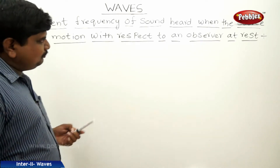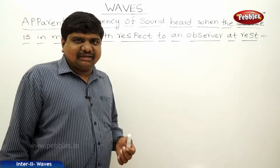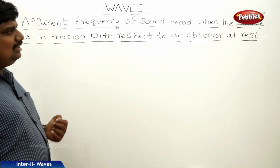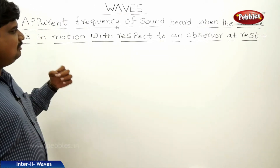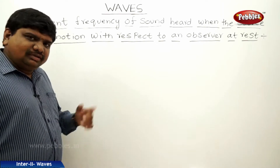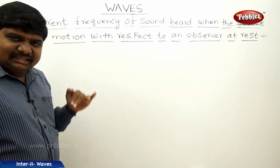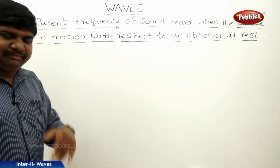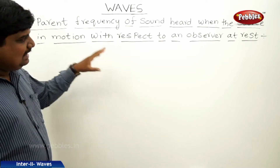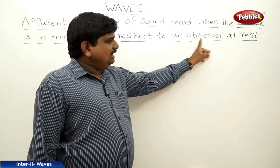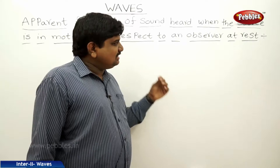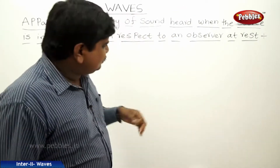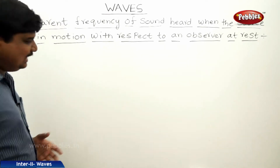This is the first situation to observe the Doppler effect. The scenario involves the apparent frequency of sound heard when the source is in motion with respect to an observer at rest. That means the observer is stationary and the source is in motion, most probably moving away from the observer. What is the apparent change in frequency observed by the stationary observer?